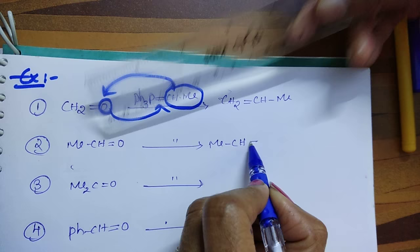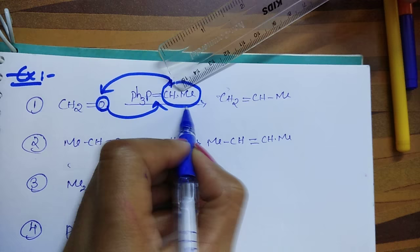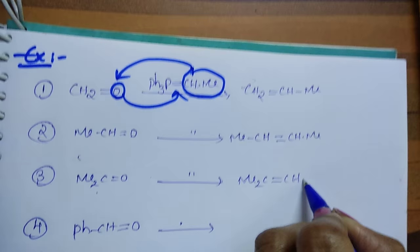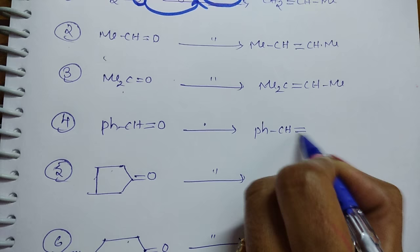CHMe. Remove this oxygen and put this one. Next, Me-C double bond CHMe. Here what you get? CH-CH double bond CHMe.